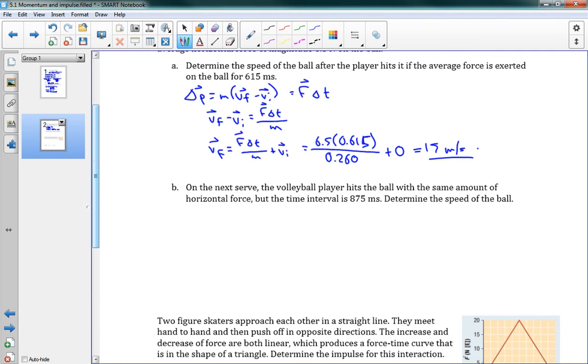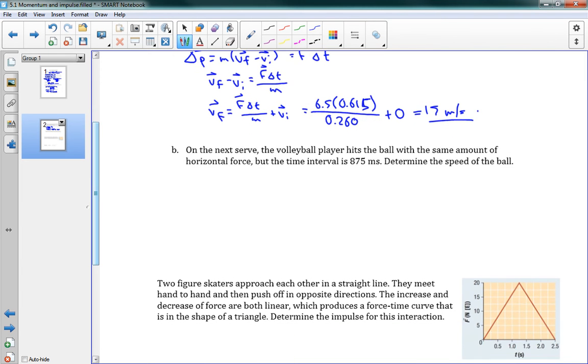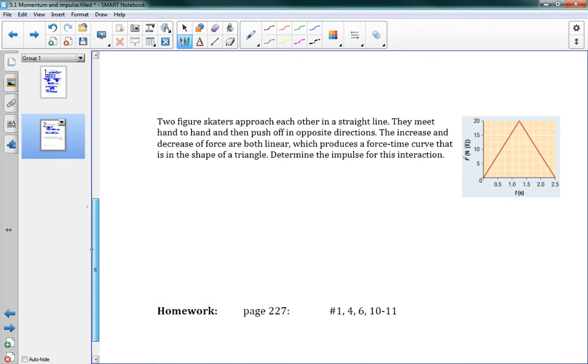Now it says on the next serve, the volleyball player hits the ball with the same amount of horizontal force, but the time interval is 875 milliseconds. Now we want to determine the speed of the ball again. Well, it's the exact same situation, but we can just replace that number in there. So we have vf is equal to f delta t over m plus vi. And we'll just replace now 6.5. The time is going to be 0.875 seconds now. If you're not familiar with milliseconds, that's just 1/1000th of a second. Over 0.260 plus 0, and this gives us a new speed of 22 meters per second.